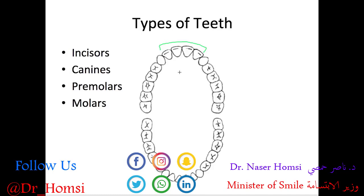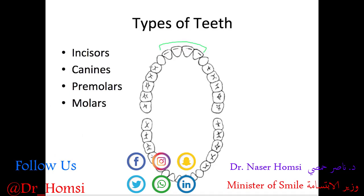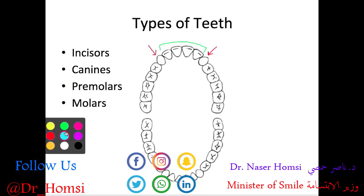The canines refer to the teeth right next to the incisors. Canines are important for tearing and holding food and also important for aesthetics. Both the incisors and the canines together are referred to as the anterior teeth because they're in the front and are the most visible of all our teeth.